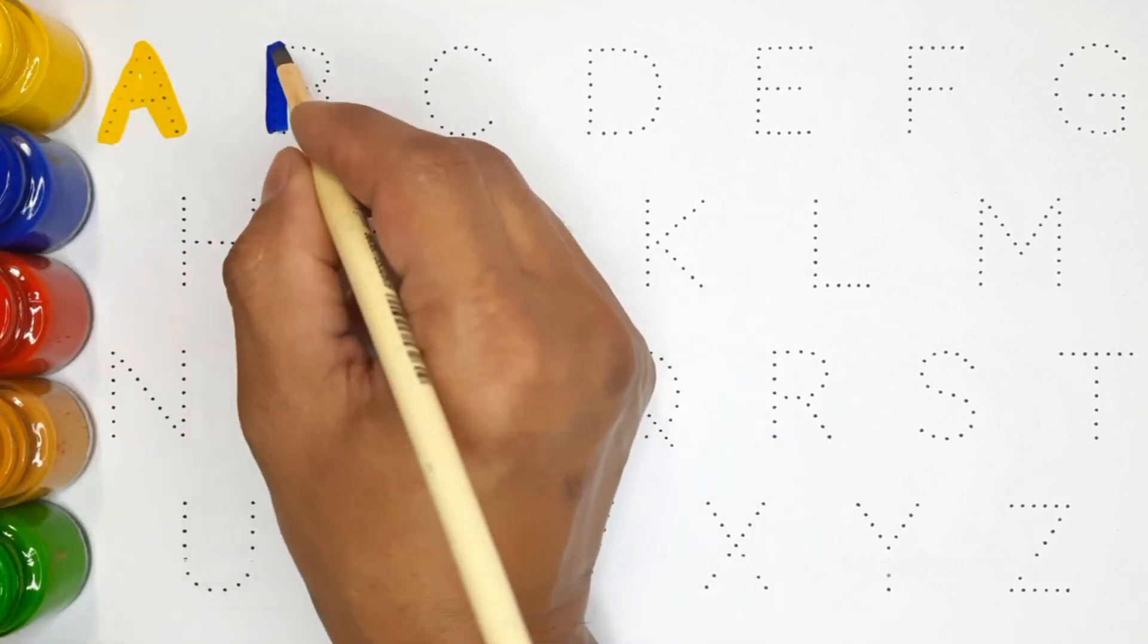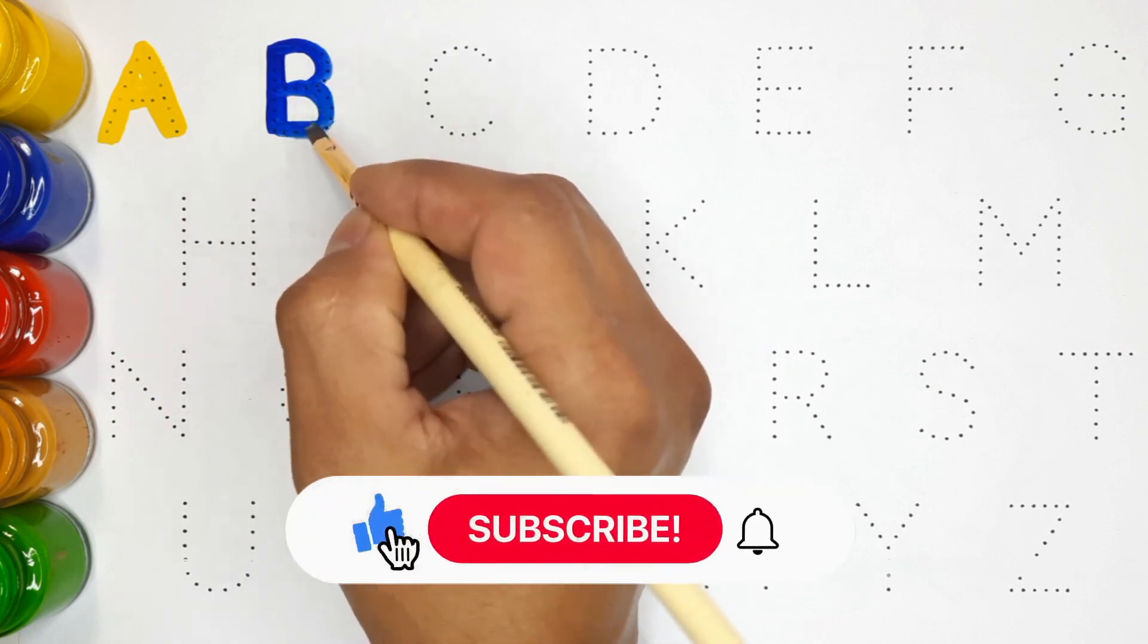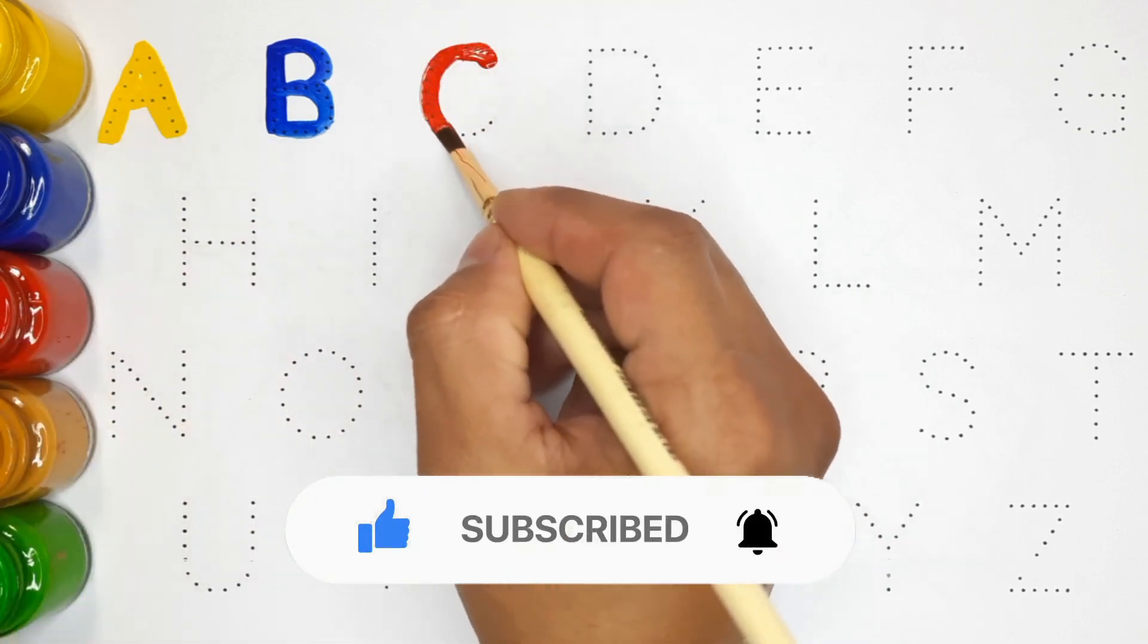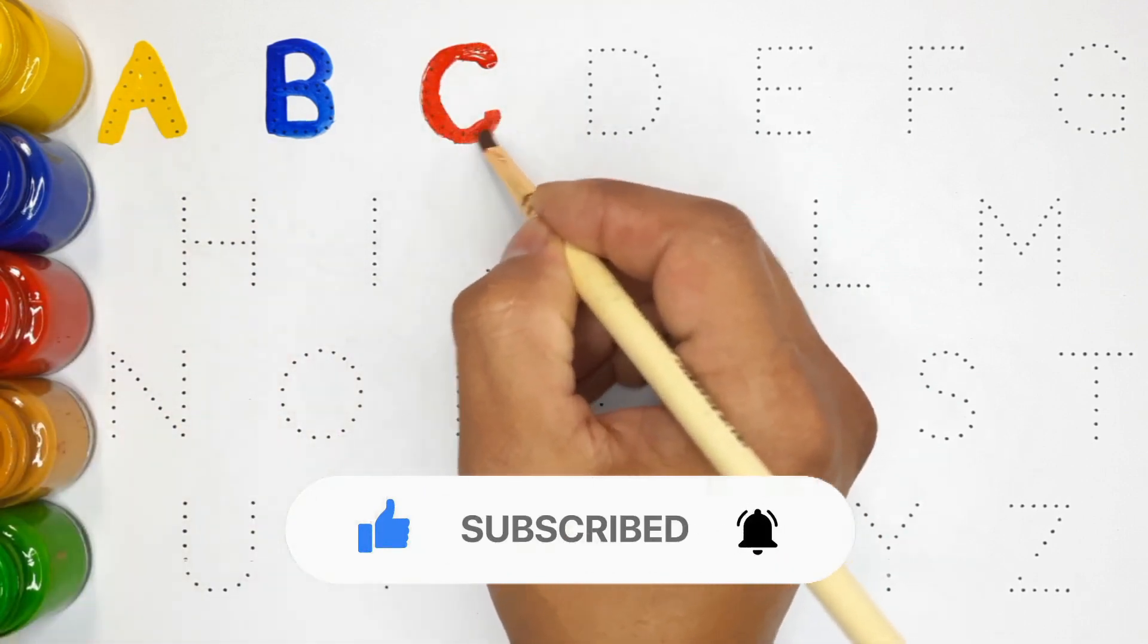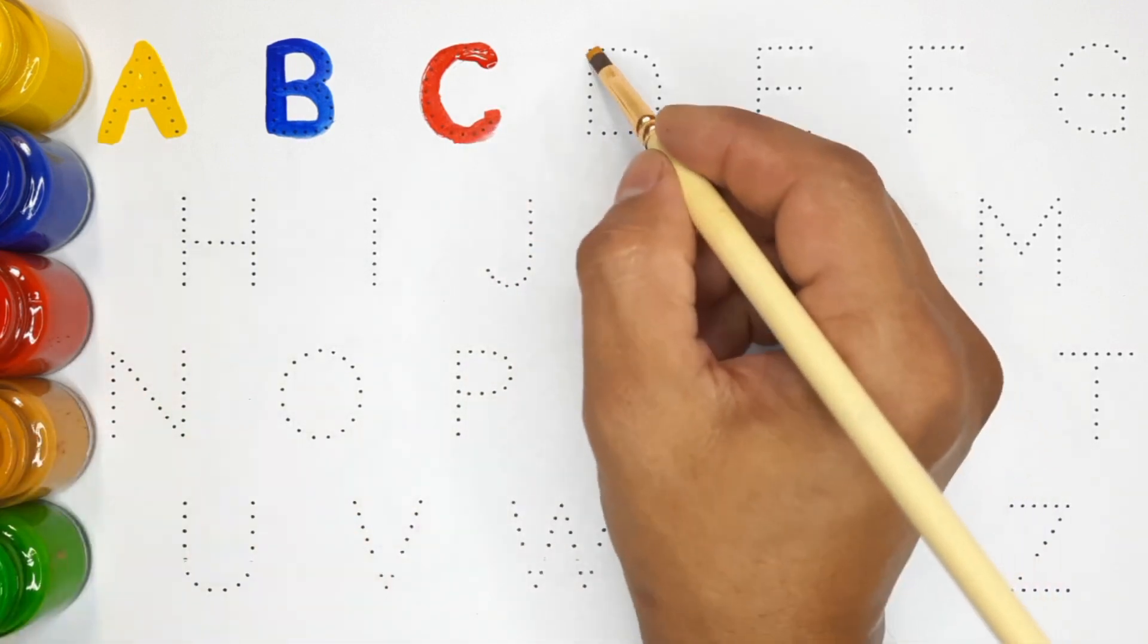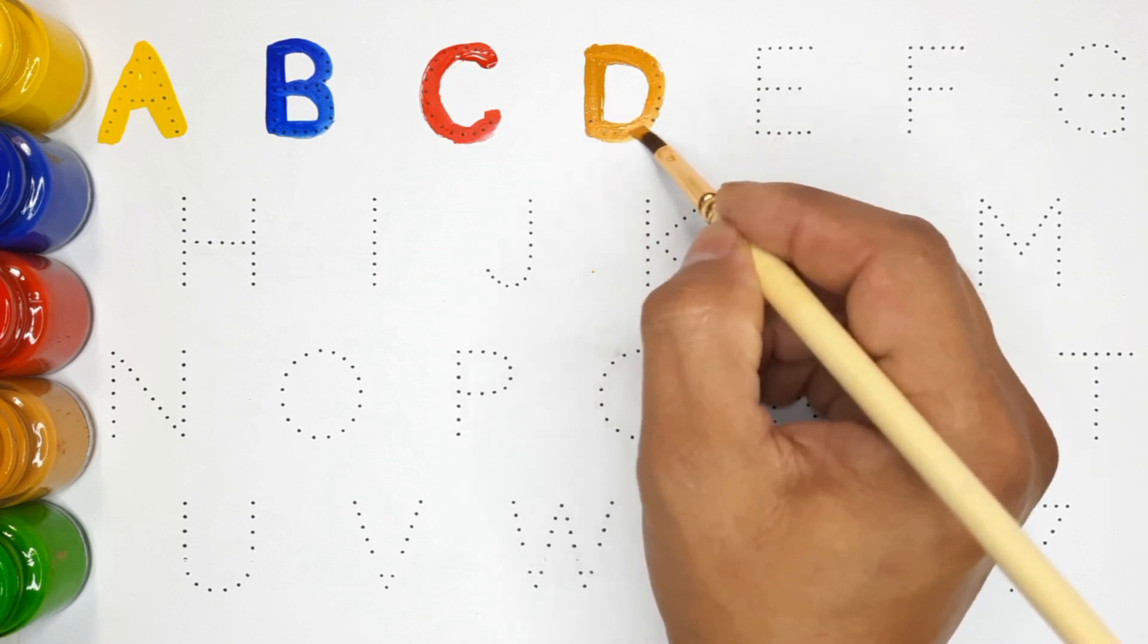B, B for ball, B for ball. C, C for carrot, C for carrot. D, D for donkey, D for donkey.